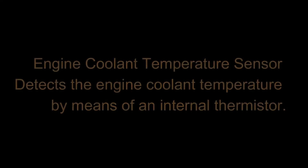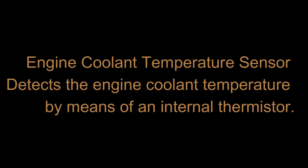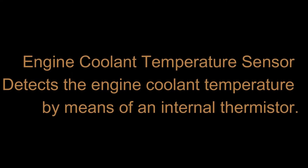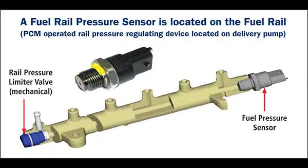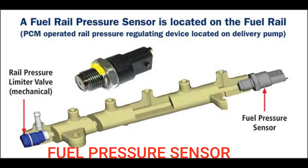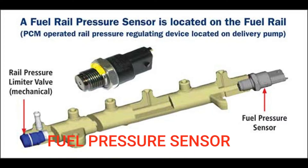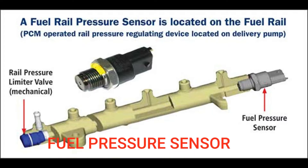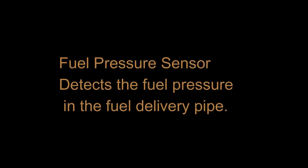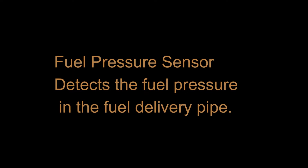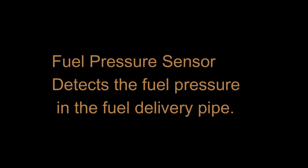Engine coolant temperature sensor detects the engine coolant temperature by means of an internal thermistor. Fuel pressure sensor detects the fuel pressure in the fuel delivery pipe.